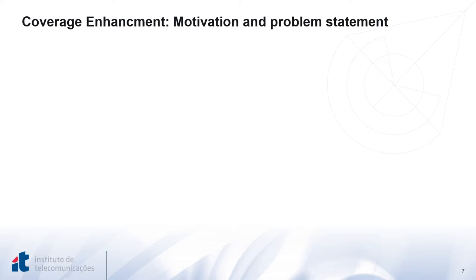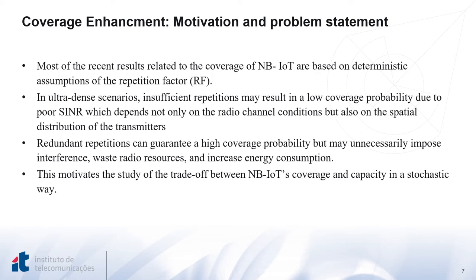One basic and important question that needs to be answered when considering repetitions is: what is the optimal repetition factor needed for specific channel conditions or network scenario? Recent results in the literature on NB-IoT coverage are based on deterministic assumptions for the repetition factor. In ultra-dense scenarios, insufficient repetitions may result in low coverage probability due to poor SNR, which depends not only on radio channel conditions but also on the spatial distribution of transmitters. On the other hand, redundant repetitions can guarantee high coverage probability but may unnecessarily impose interference, leading to waste of radio resources and increased energy consumption. This motivated us to study the trade-off between NB-IoT coverage and capacity in a stochastic rather than deterministic way.